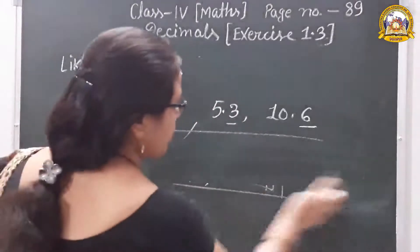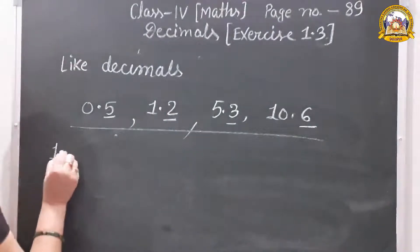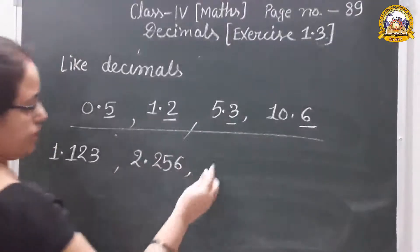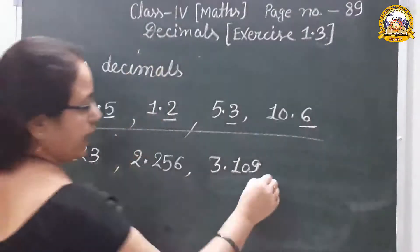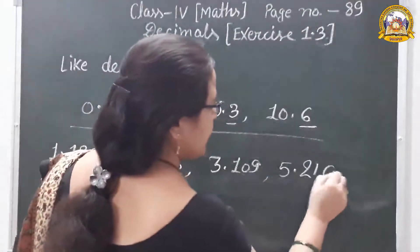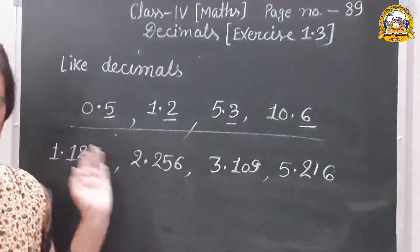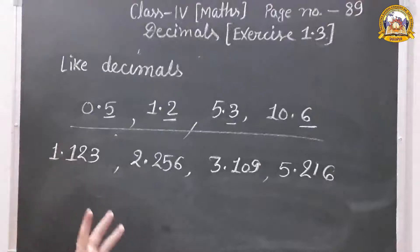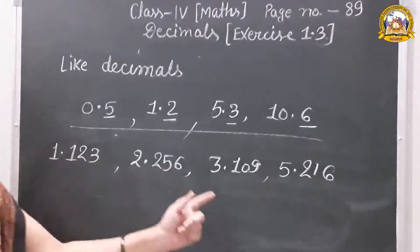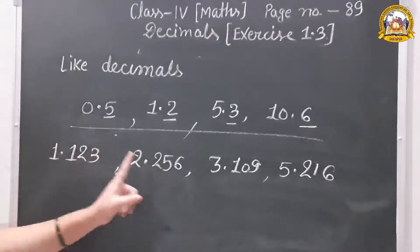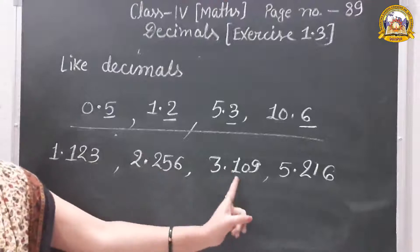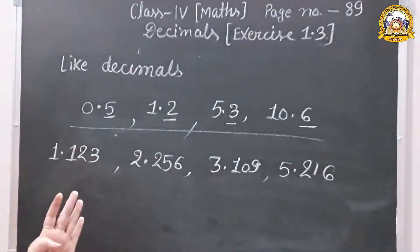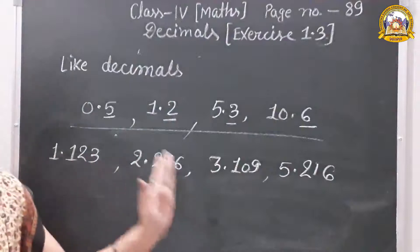Another example of like decimals. Suppose the numbers 1.123, 2.256, 3.109, and 5.216. Look at all the decimal numbers carefully — each decimal number has three decimal places: after the decimal, one, two, three digits. Therefore, all of them are like decimals.